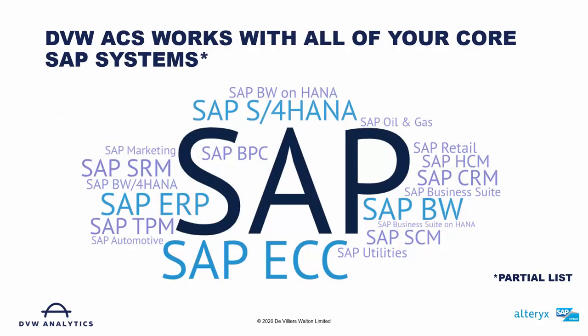When we first designed and developed the ACS, we wanted to make sure that we could connect to as many SAP systems as possible with the one product, and surely you'll recognize a number of the SAP product names here. Primary amongst all of these would be SAP ECC for the current generation, and SAP S/4HANA for the new generation, as well as the various industry solutions that are supported by SAP.